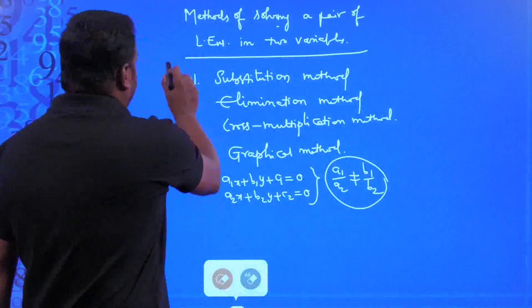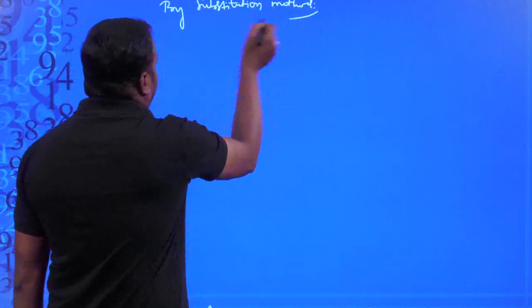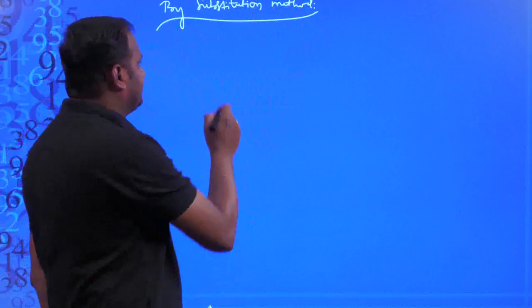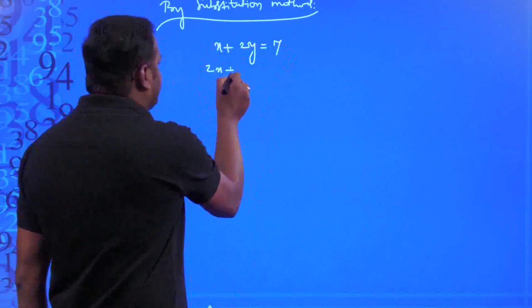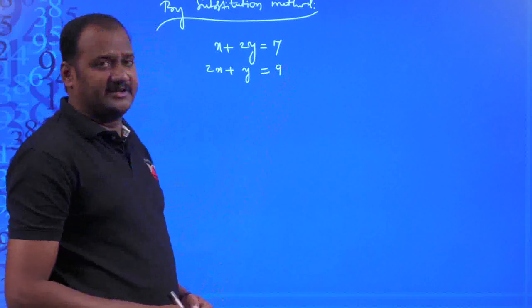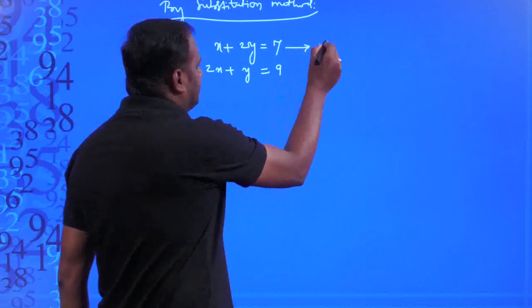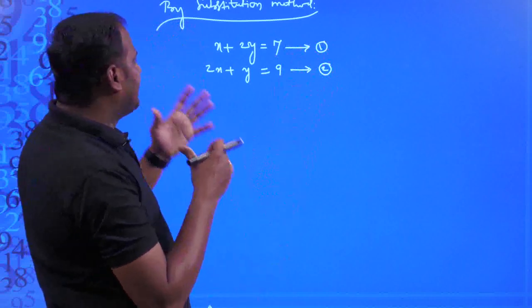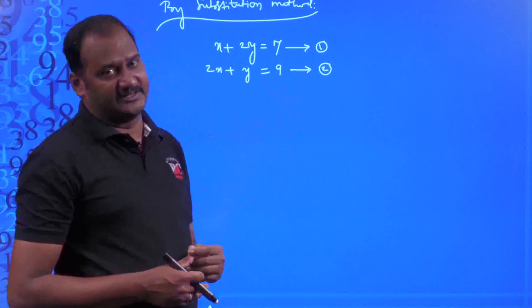Let us take one example and try to solve those linear equations in two variables by all these methods. First, by the substitution method. According to this method, I am going to take a pair of linear equations: x + 2y = 7 and 2x + y = 9. Substitution itself means you need to find the value of one variable from one of the equations and then substitute that value into the second equation.